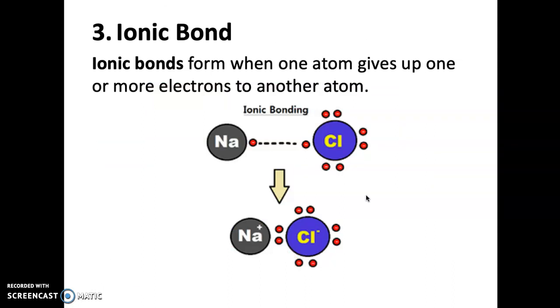Okay, one last one we're going to look at is the ionic bond. The ionic bond forms when one atom gives up one or more electrons to another atom. So it's not sharing any longer. It's not saying, here, you borrow one and I'll supply the other one. No, it's like you take it. It's gone.